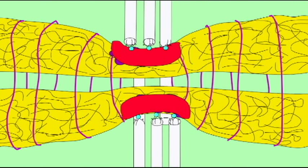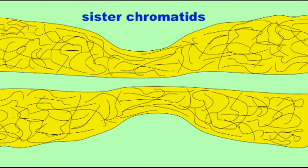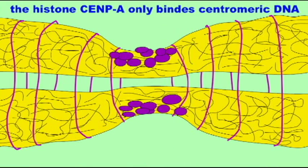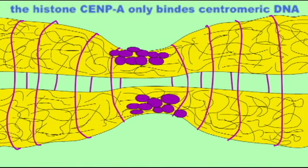These form the inner plate of the kinetochore, which then bind to proteins of the outer plate of the kinetochore. These outer plate proteins include NDC80.